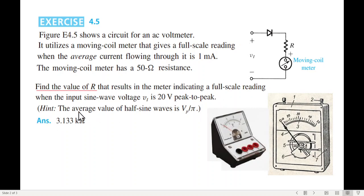The average value for half sine wave is V peak divided by pi. The answer is given. So in the first place, we mark the current. The current is 1 milliampere current flow for full-scale reading. So we calculate the input voltage.